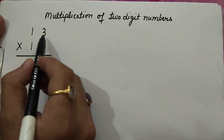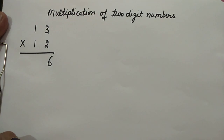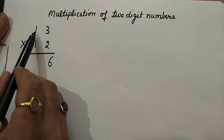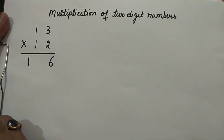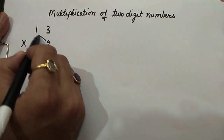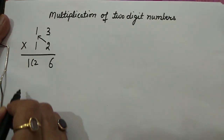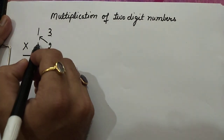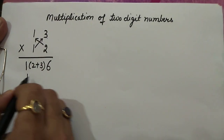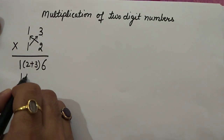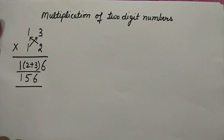First, 3 multiply 2, let's write 6. Then 1 multiply with 1, let's write 1. Now, 2 into 1 we get 2, plus 1 into 3 we get 3. So the answer is 1, 5, 6 — that means 156.